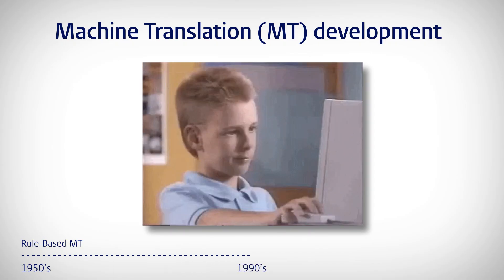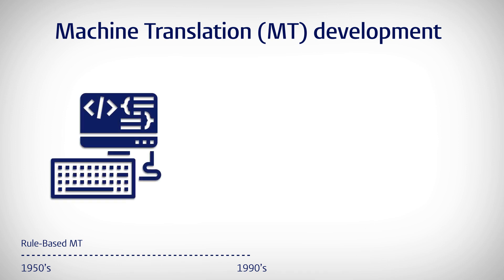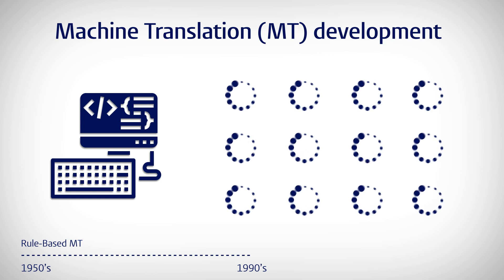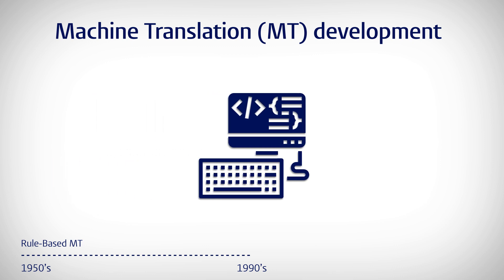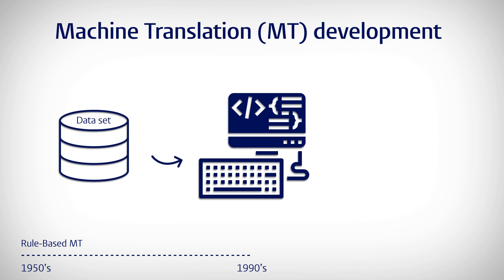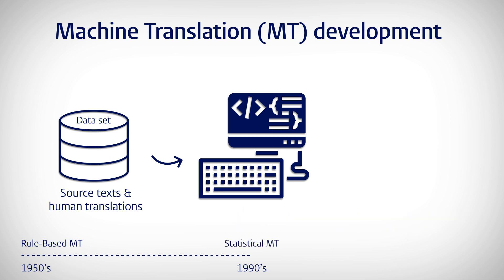By the 1980s and 90s, computers had become much faster, and the internet was on the rise. Engineers soon realized they should let machines do what they do best: run lots and lots of calculations really, really fast. So instead of training the machine on a dictionary and grammar rules, engineers started feeding their systems lots and lots of data — specifically, lots of source text or originals, and their human translations — so the machine could go through the translations and find patterns. For each word, the system would search through the data and calculate the statistical probability that word A in language A corresponds to word B in language B. Statistical machine translation already worked surprisingly well, but something was still missing.